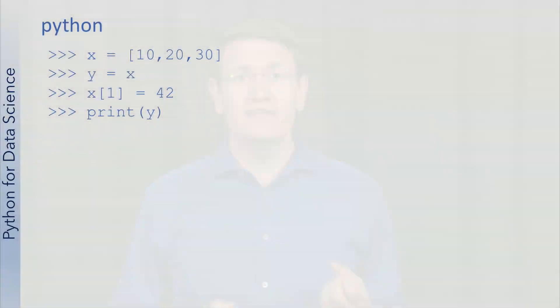As with the previous quizzes, let's walk through the solution to this last question. Your question was, what would this code produce? To arrive at that answer, let's trace through a memory diagram step by step.